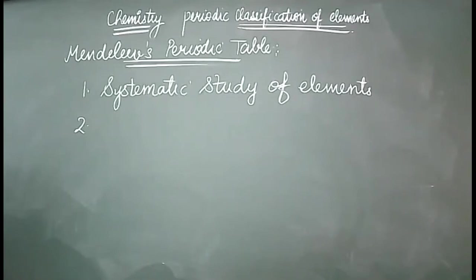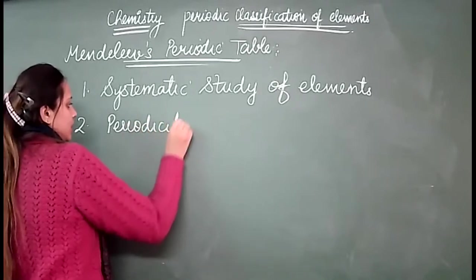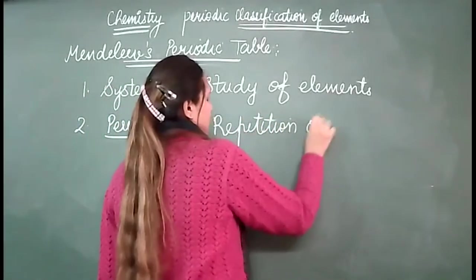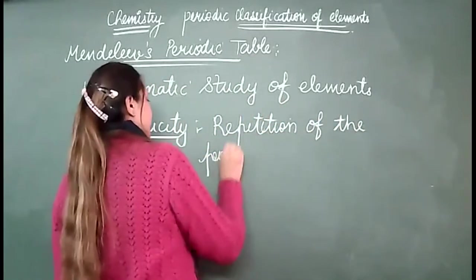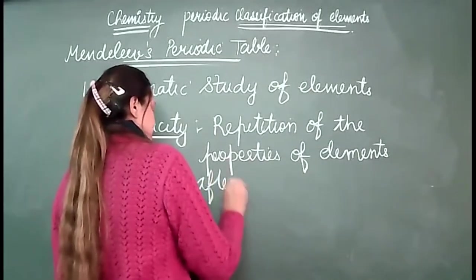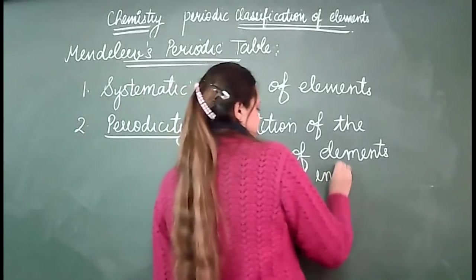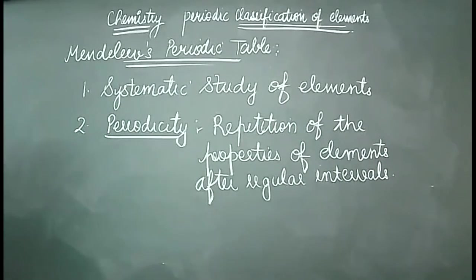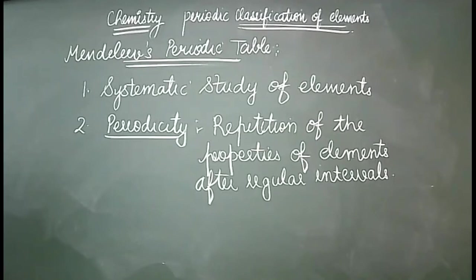Secondly, his classification was based on atomic masses, so from one atomic property, a periodic property emerged — there was periodicity. Periodicity is basically the repetition of the properties of elements after regular intervals. He actually gave the concept of periodicity, discovering that based on atomic masses, some properties repeat at regular intervals. This repetition of properties he called periodicity.